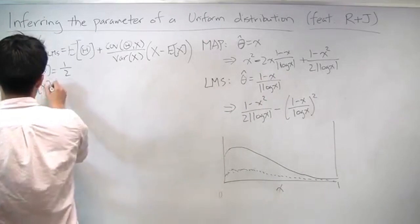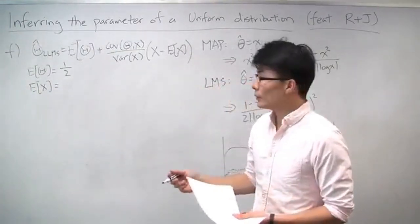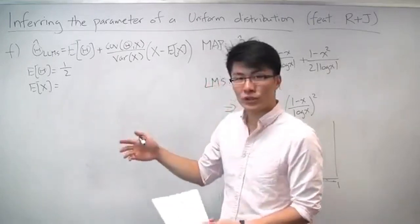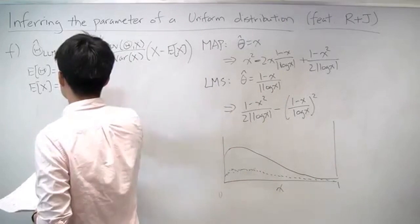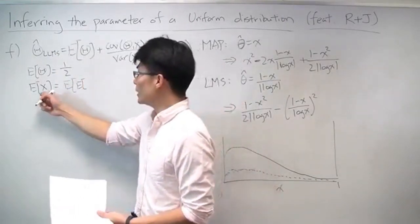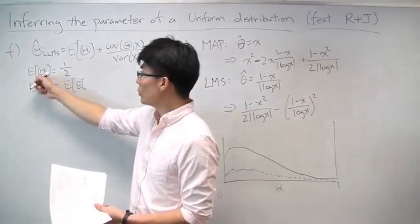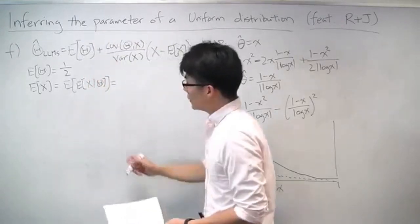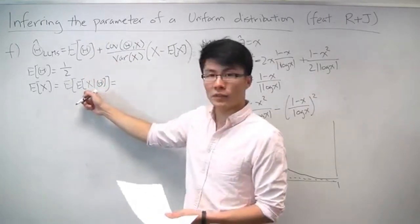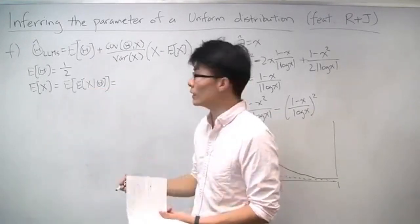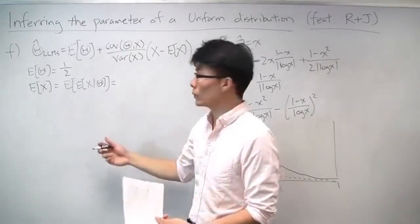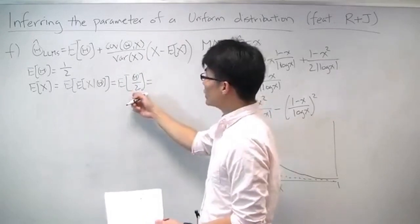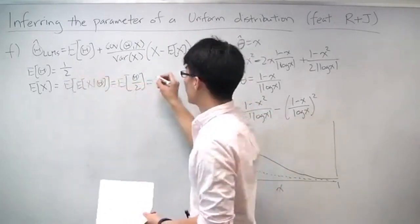The expectation of x is a little more complicated. Since we have a hierarchy of randomness, it's helpful to use the law of iterated expectations and condition on theta. If we knew what theta was, then x is uniformly distributed between 0 and theta, so the conditional expectation of x given theta is theta over 2. Therefore, E[x] equals the expectation of theta over 2, which is 1/2 times 1/2, giving us 1/4.